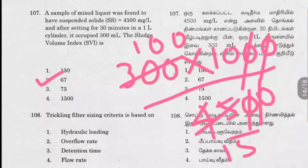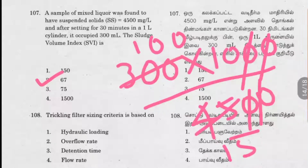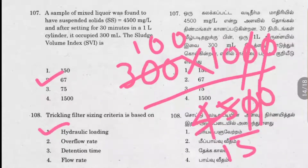Question 108: The trickling filter sizing criteria is based on what? Options include hydraulic loading, overflow rate, detention time, and flow rate. Detention time won't decide the sizing in a trickling filter. Hydraulic loading is a very important characteristic in the trickling filter process and it decides the sizing criteria. So option 1 is the right answer.